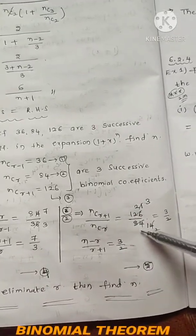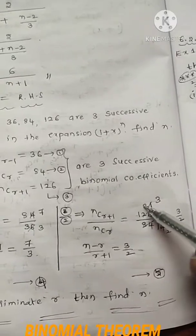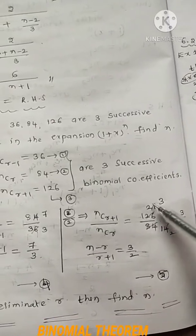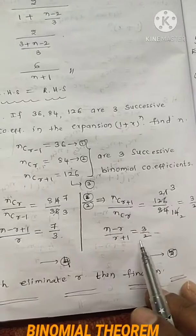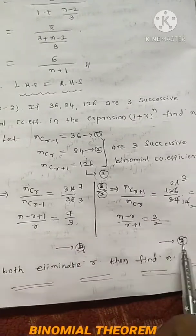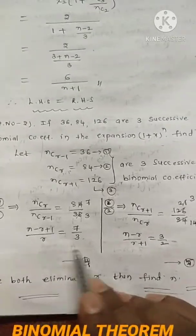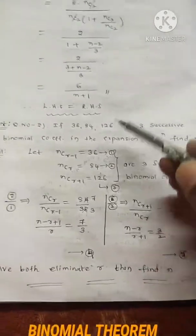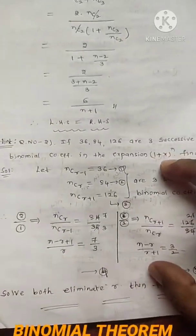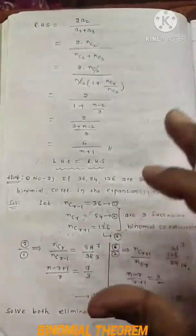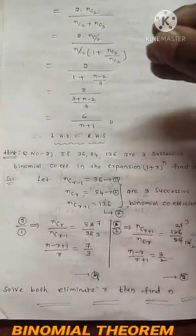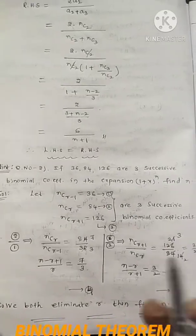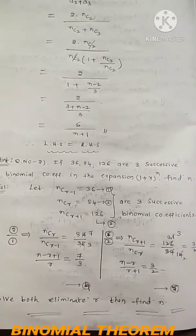Using the table values: set up equations from the ratios, cross-multiply, solve for r and n. All four questions are now complete. That's it for today's session — morning and evening work will finish by next morning's class. Thank you all.